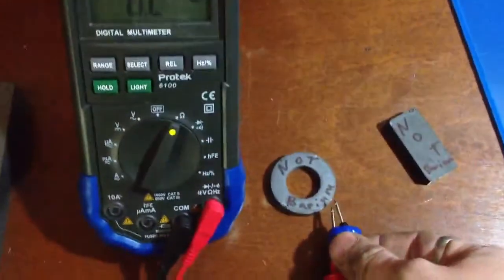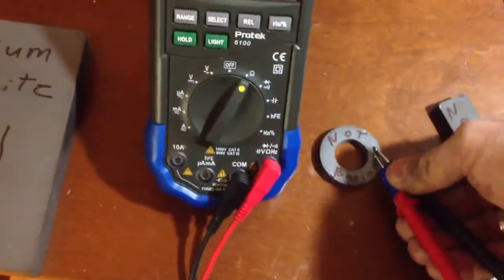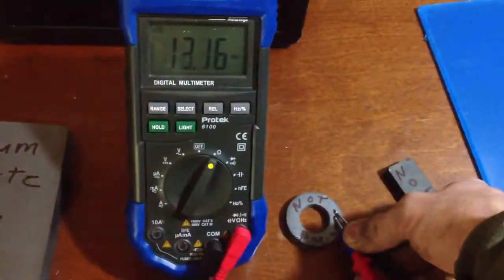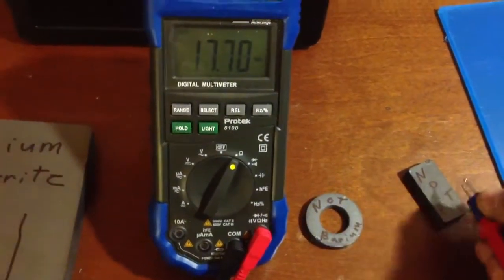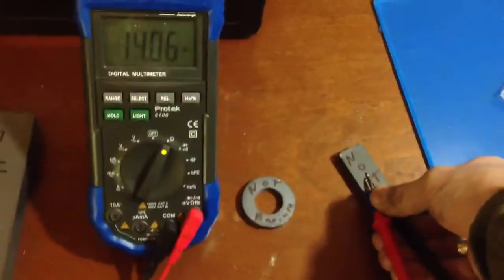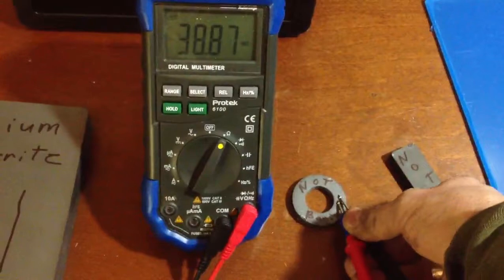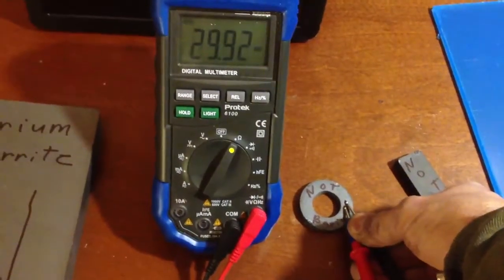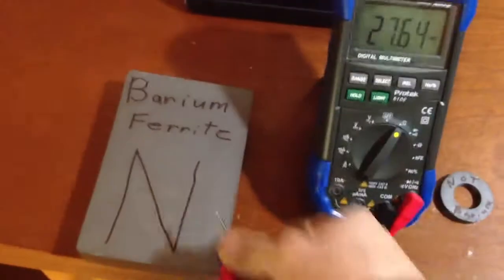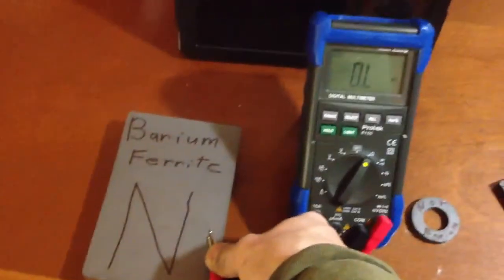If we move this to a non-barium magnet, this is strontium. Look at that, you get a reading right away. And if you go to this magnet right here, same thing. You get a reading. So all these magnets will give a reading of different resistance, except for the barium ferrite.